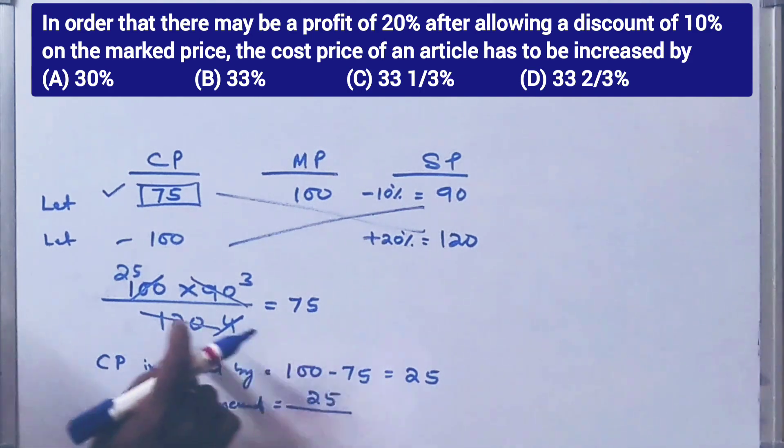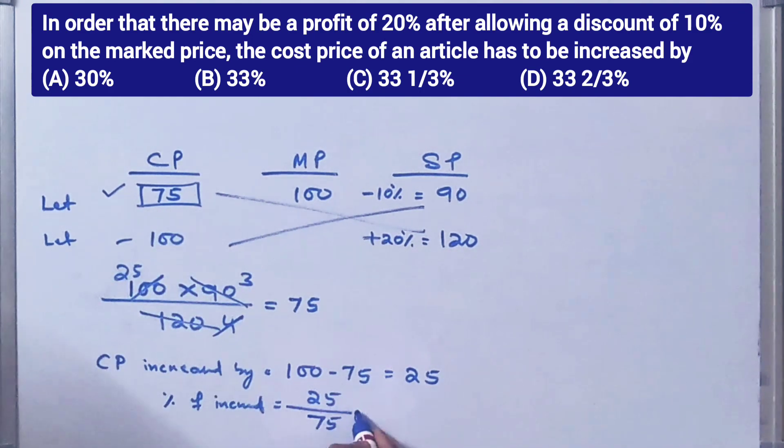The cost price of an article has to be increased by 25 divided by 75. 75 into 100 equals, 25 record is 3, 100 by 3 equals 33, 1 upon 3 percent.